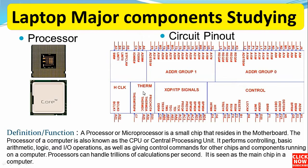As a definition, a processor or microprocessor is a small chip that resides in the motherboard. The processor of a computer is also known as the CPU or central processing unit. It performs controlling, basic arithmetic, logic, and input/output operations, as well as giving control commands for other chips and components running on a computer. Processors can handle trillions of calculations per second and are seen as the main chip in a computer.